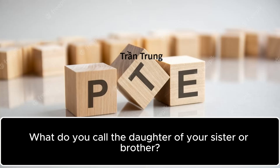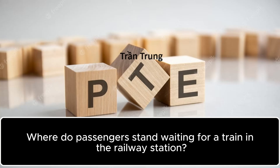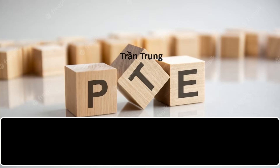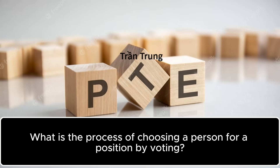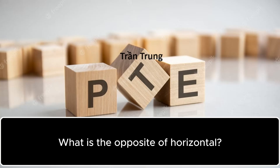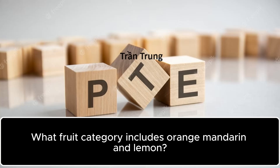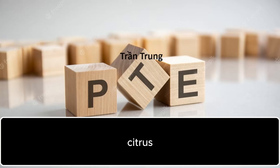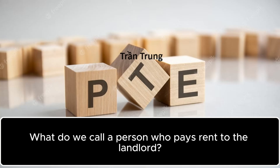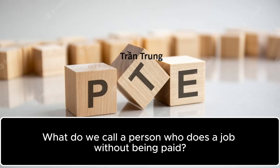What do you call the daughter of your sister or brother? Niece. Where do passengers stand waiting for a train in the railway station? Platform. What is the process of choosing a person for a position by voting? Election. What is the opposite of horizontal? Vertical. What fruit category includes orange, mandarin and lemon? Citrus. What do we call a person who pays rent to the landlord? Tenant. What do we call a person who does a job without being paid? Volunteer.